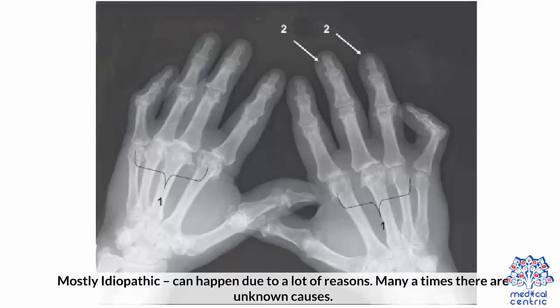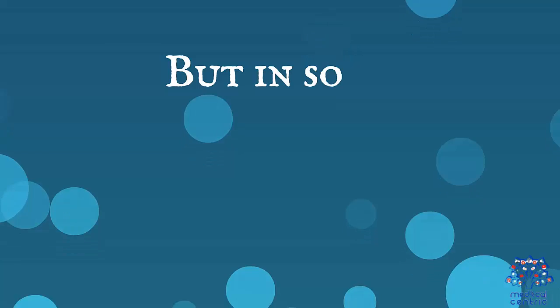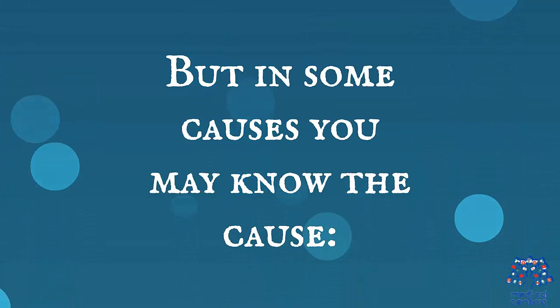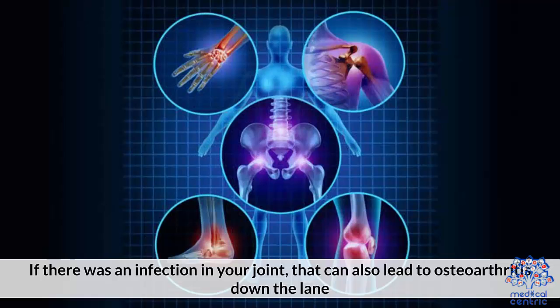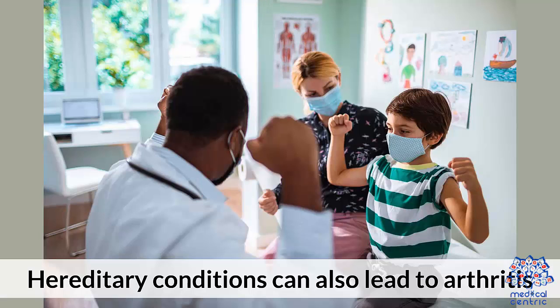The causes of osteoarthritis are mostly idiopathic — it can happen due to a lot of reasons. Many times there are unknown causes, but in some cases you may know the cause. It can occur after a fracture, a condition known as post-traumatic osteoarthritis. If there is an infection in your joint, that can also lead to osteoarthritis down the line. Hereditary conditions can also lead to arthritis.